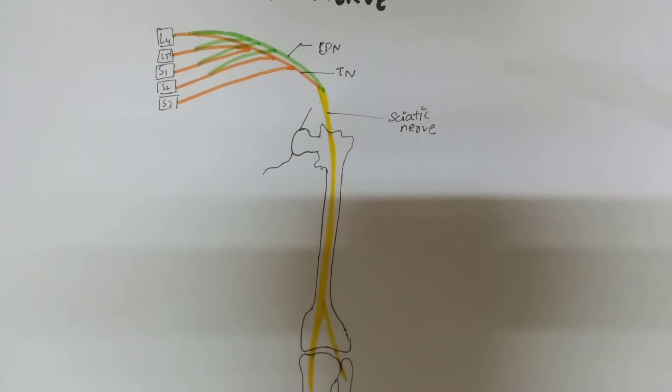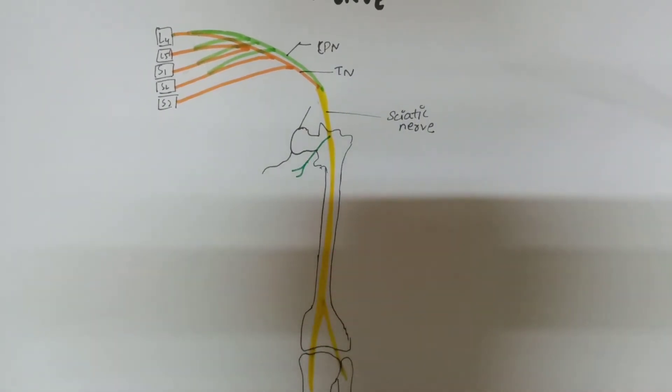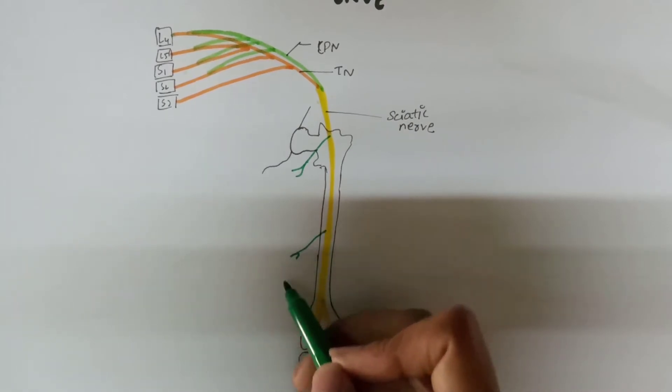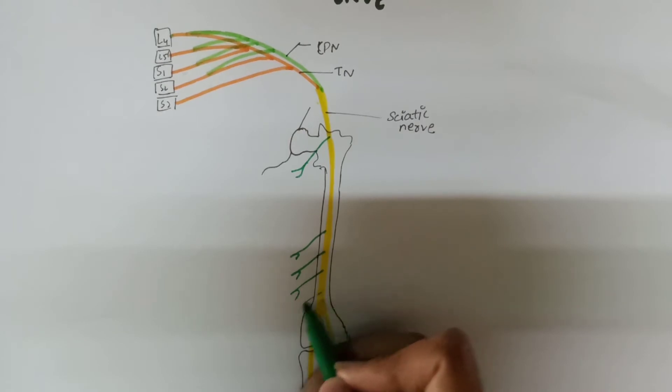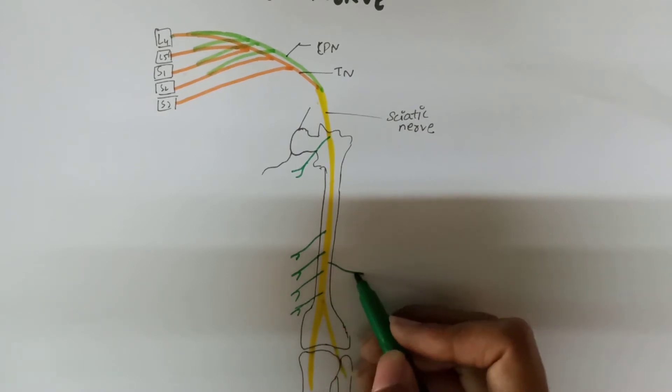It gives off some branches: one articular branch to the hip joint and some muscular branches. It gives five muscular branches, four on the medial side and one on the lateral side.